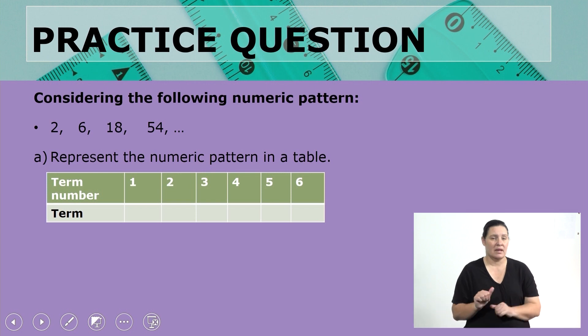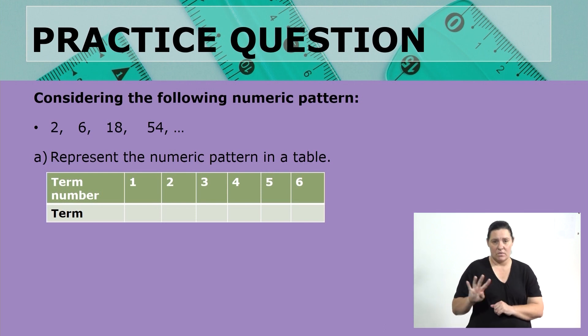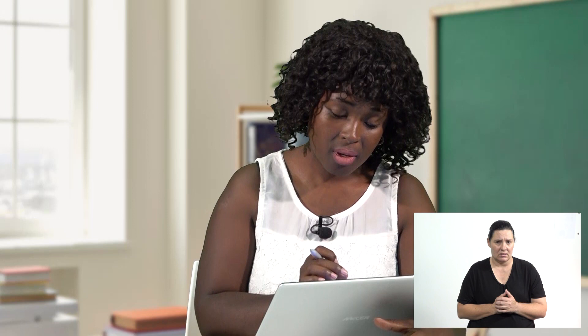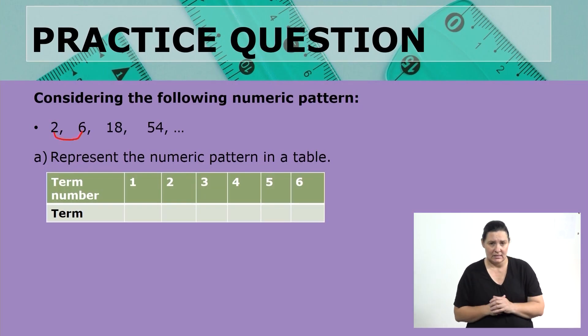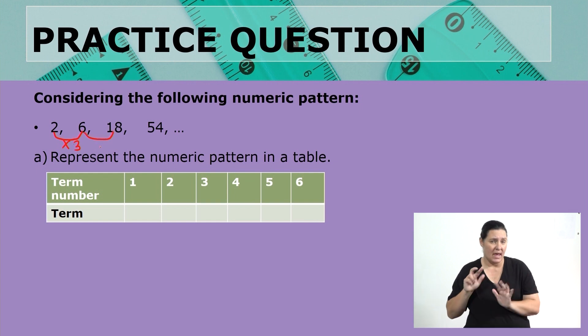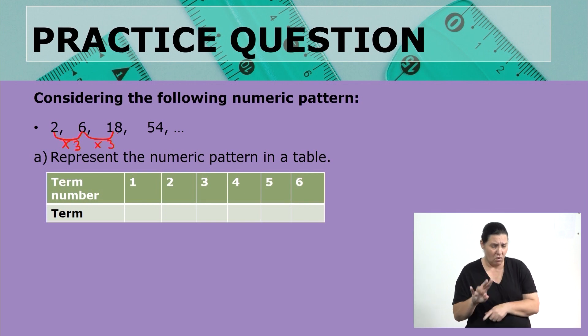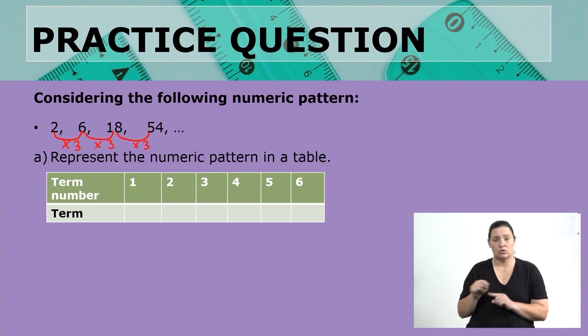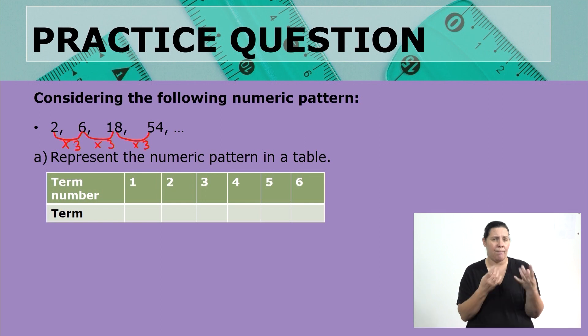Let's go on to the next pattern. Considering the following numeric pattern: 2, 6, 18, 54 — represent the numeric pattern in a table. We are going to look at this pattern and try to see what is going on from the first term to the second and third term. When I look at 2 and 6, from 2 to 6 I multiply by 3. From 6 to 18 I multiply by 3. And 18 multiplied by 3 is also 54 — so from 18 to 54 we multiply by 3. There is a constant number we are multiplying by.